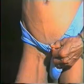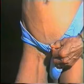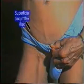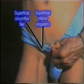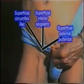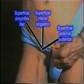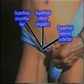Now look for dilated veins over the lower abdomen above the inguinal ligament converging onto the saphenous opening. These are the superficial circumflex iliac, superficial inferior epigastric and superficial external pudendal veins, which enter the long saphenous vein just before it joins the femoral vein.